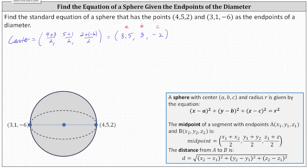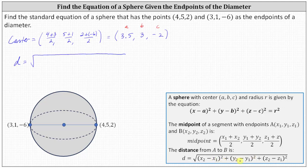We'll let d equal the length of the diameter and find the length using the given endpoints. The length of the diameter equals the square root of (x₂ minus x₁) squared plus (y₂ minus y₁) squared plus (z₂ minus z₁) squared. Using the two endpoints, (x₂ - x₁) gives us (3 - 4), plus (y₂ - y₁) gives us (1 - 5).